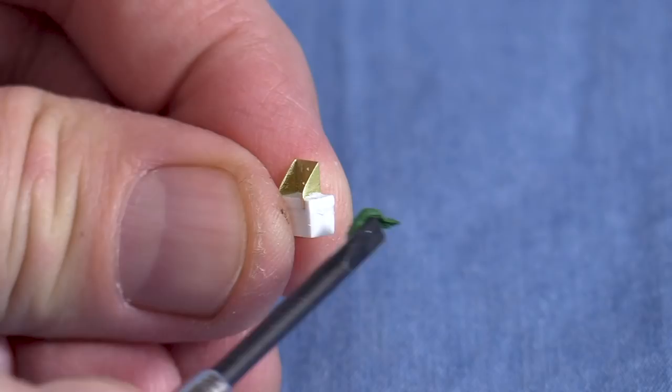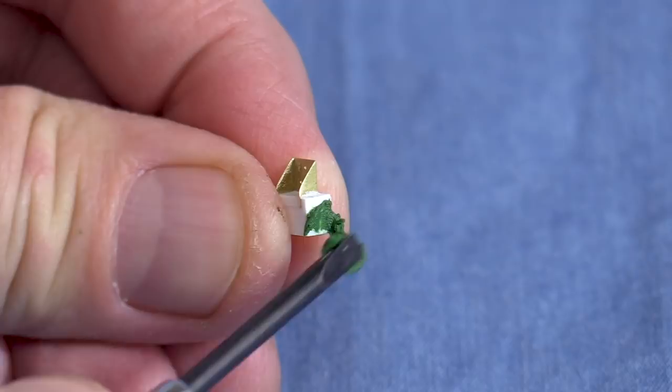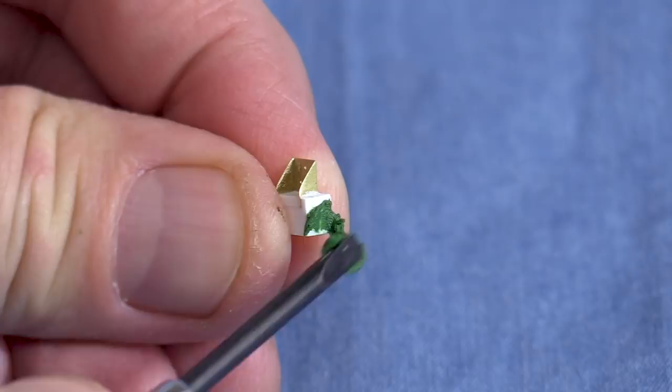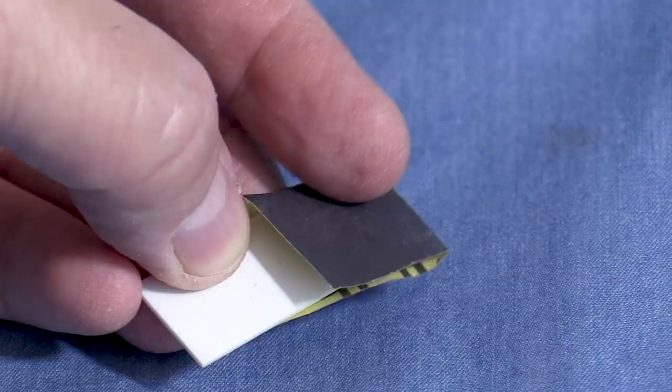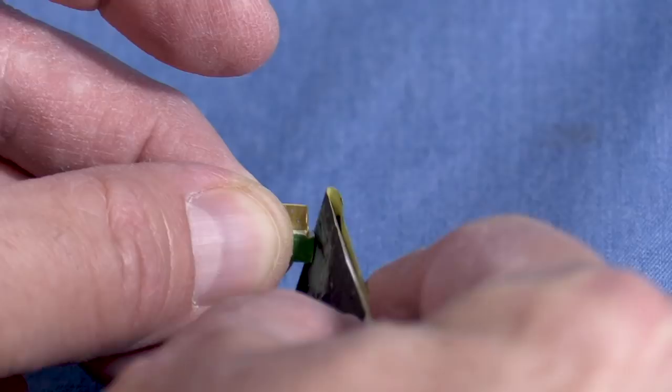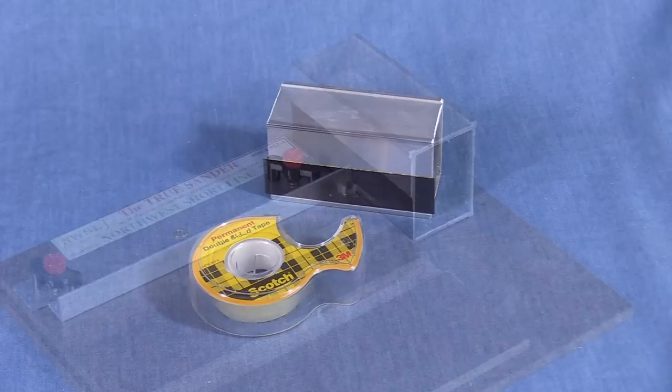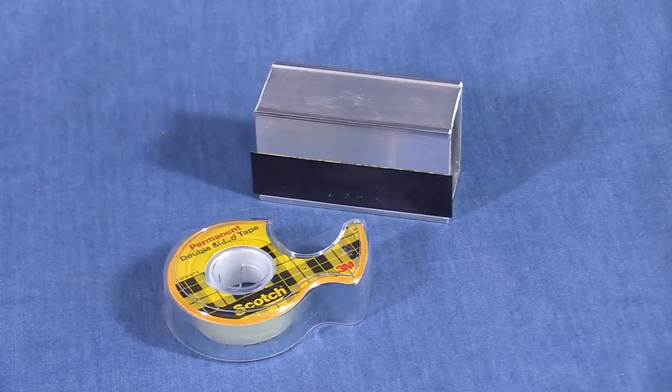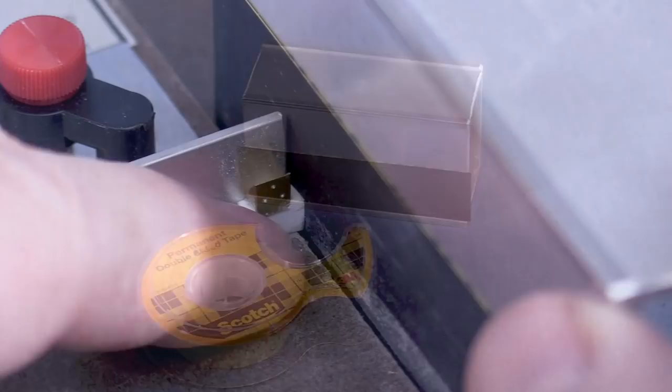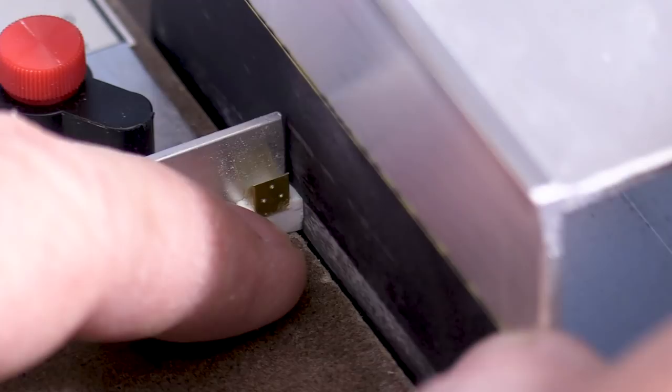Now that the part is cut down to size, I'll use some Squadron green putty to fill any remaining seams between the layers of plastic that make up the box. I generally like to let the putty dry overnight before sanding it. I'm using an improvised sanding block made from a piece of 400 grit paper wrapped around a scrap piece of plastic. To make sure everything is square, I'm using a Northwest Shortline True Sander for the final sanding. I used some double-sided tape to stick a piece of 400 grit paper to the metal sanding block. I'm only making a few slow passes, checking as I go until everything is square.